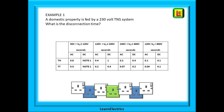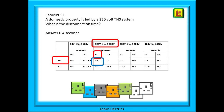Let us use the table to work out a few examples, starting with example 1. A domestic property is fed by a 230 volt TNS system — what is the disconnection time? Looking at the table we find the row TN for TNS on the left. At the top, choose the voltage range 120 to 230 since our nominal voltage does not exceed 230 volts. It is AC, so choose the correct column. Where the column and row meet is the answer — here in blue, it is 0.4 seconds.